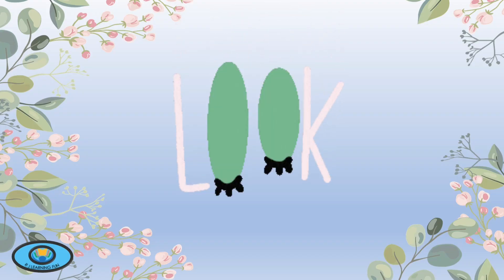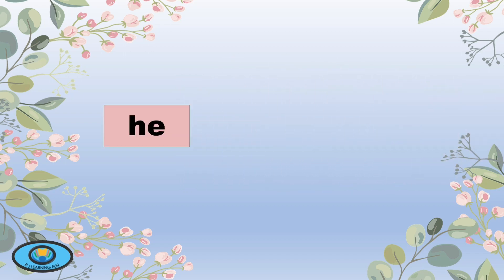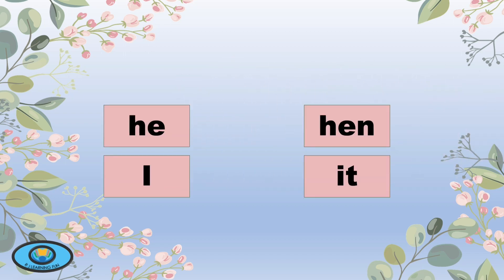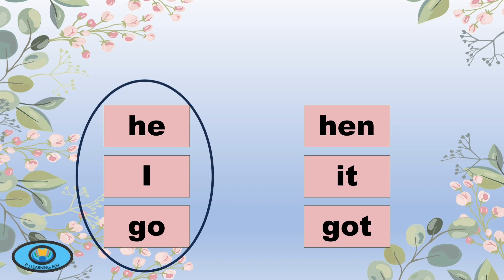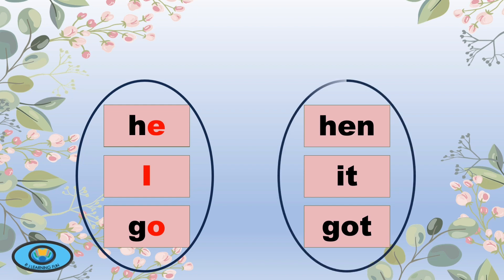let's take a closer look at these two sets of words: he, hen, I, it, go, got. In the first set of words, the vowel sound is long. The vowels are saying their letter names like he, I, go. But in the second set, the vowel letters are the same but the vowel sound is short, like hen, it, got.